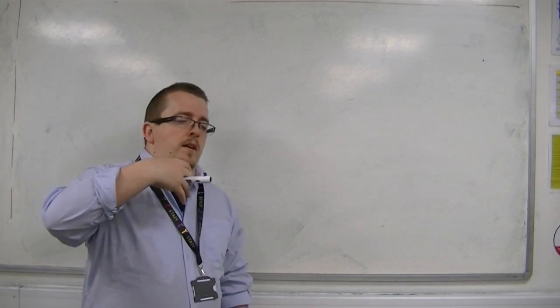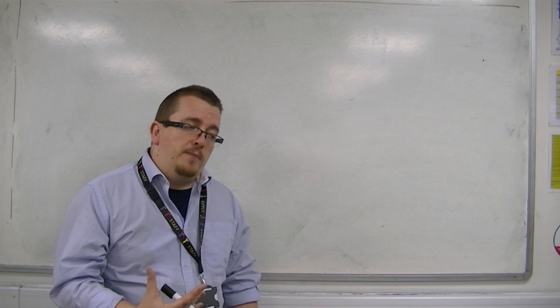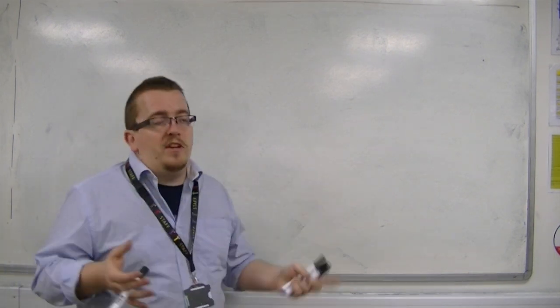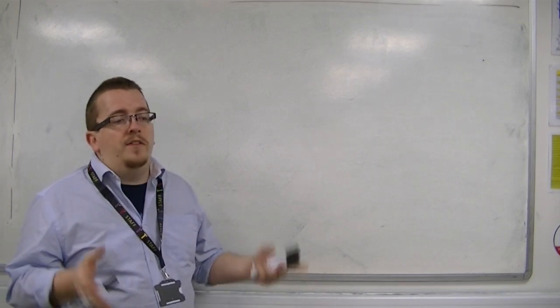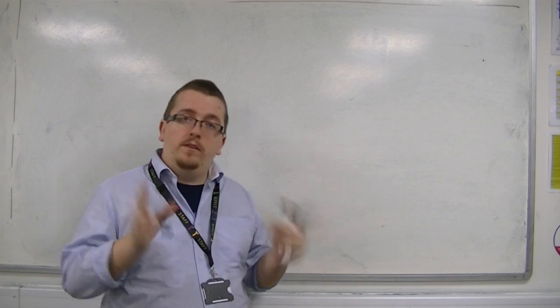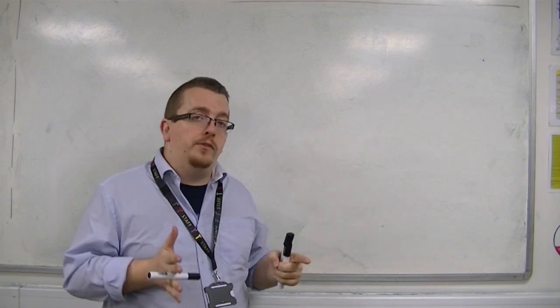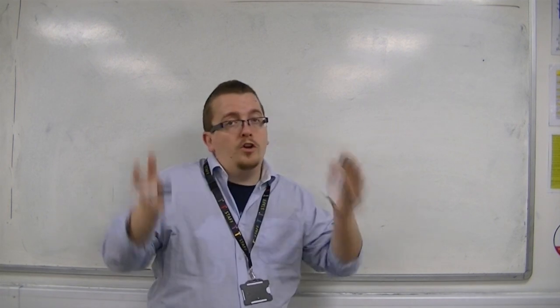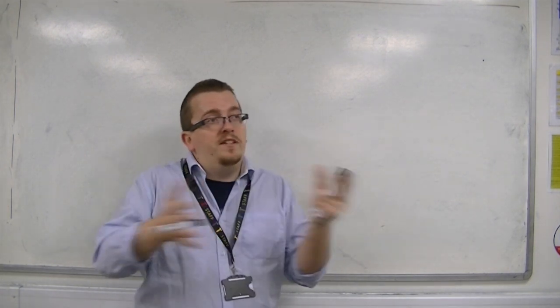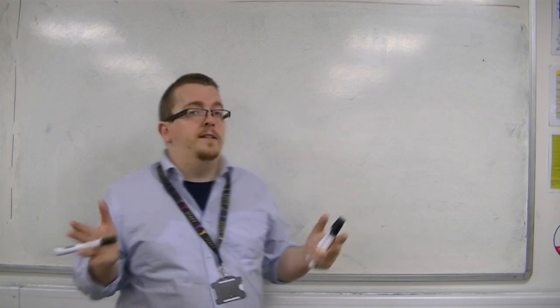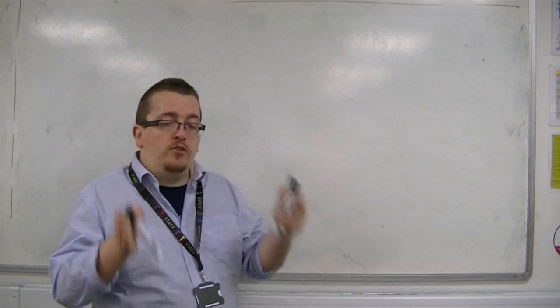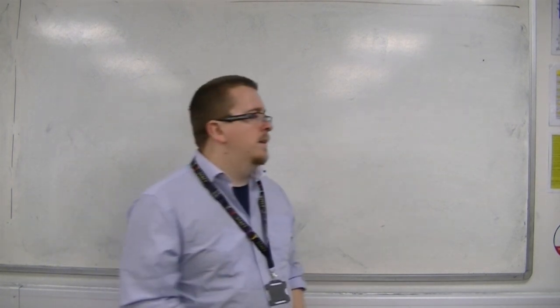But there is a way of using that information to then say, I am 90% confident that the population mean will be between two certain values. And this is what we are going to mean by a confidence interval. So it might be 90% confident, it might be 95% confident or 99% confident. It's just a percentage of what I am considering.